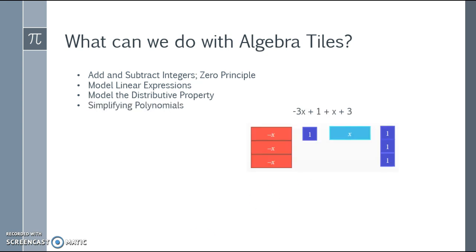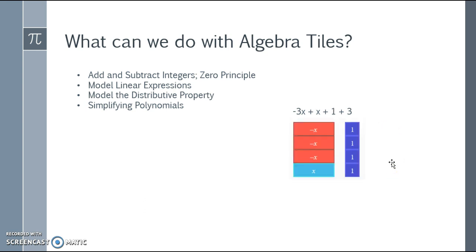I can simplify polynomials. I have negative three x plus one plus x plus three. Rearranging to combine those together, I see that I have a group of zero which I can get rid of, leading me to just negative two x plus four.